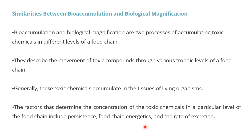The factors that determine the concentration of toxic chemicals at a particular level of the food chain include persistence, food chain energetics, and the rate of excretion. Some substances can be broken down and excreted by an organism, but some compounds are very harmful and cannot be metabolized or regulated through the organism's body, so they just start accumulating.